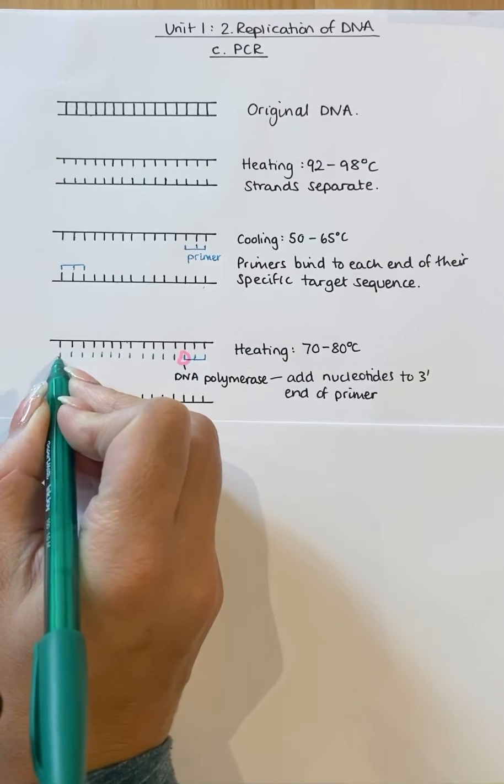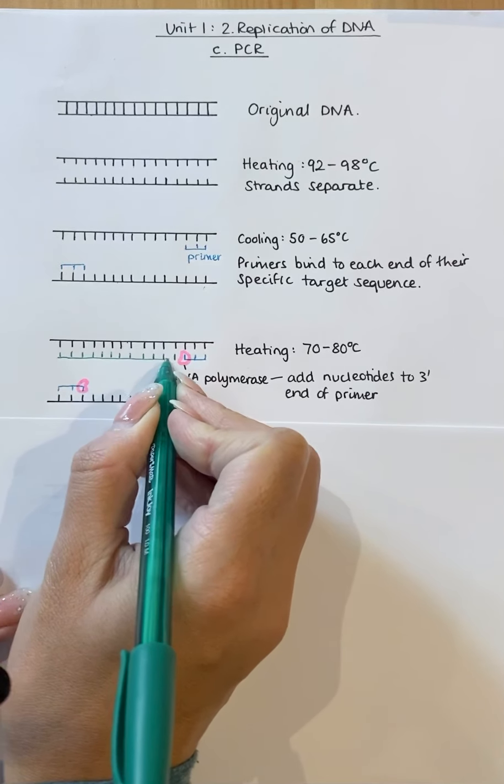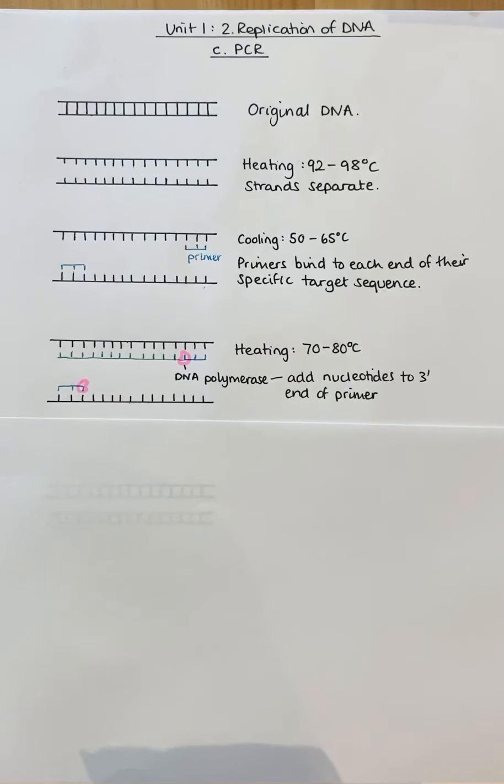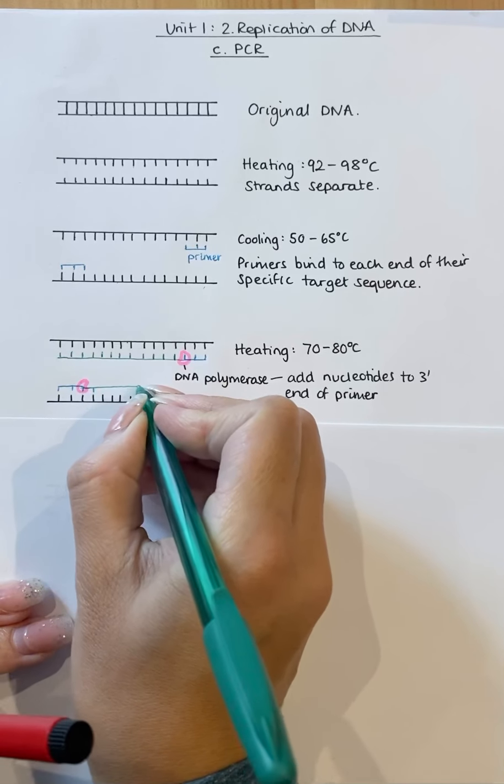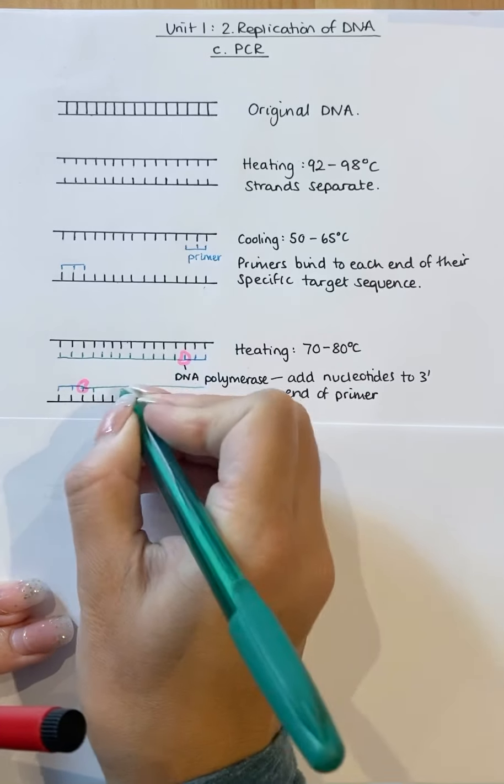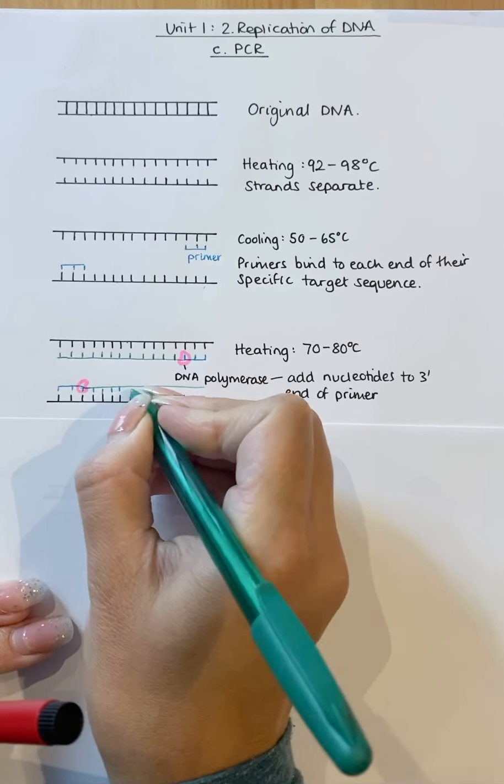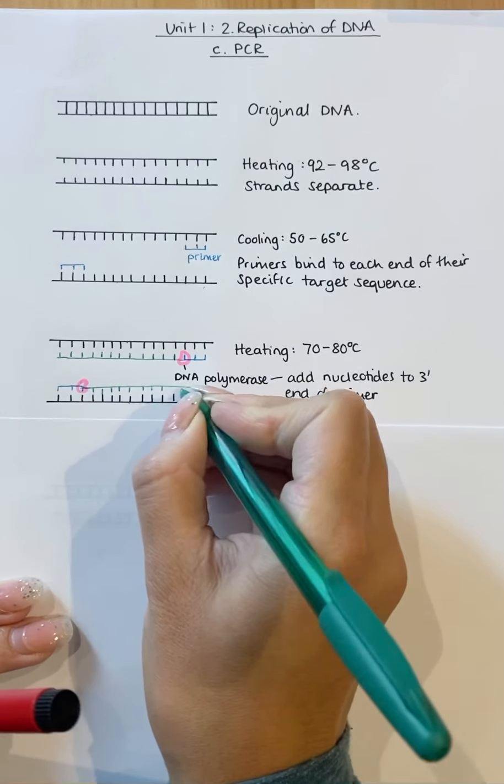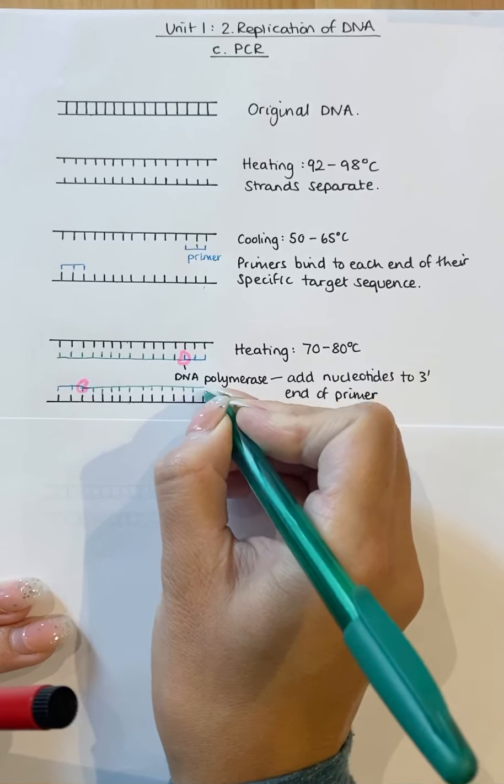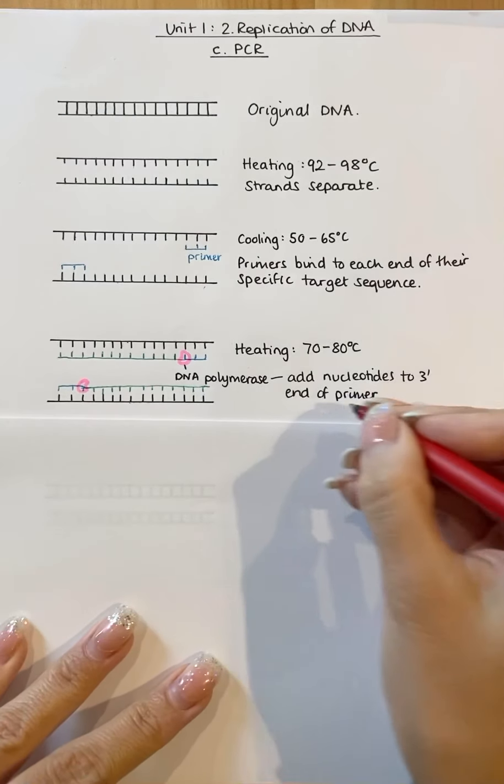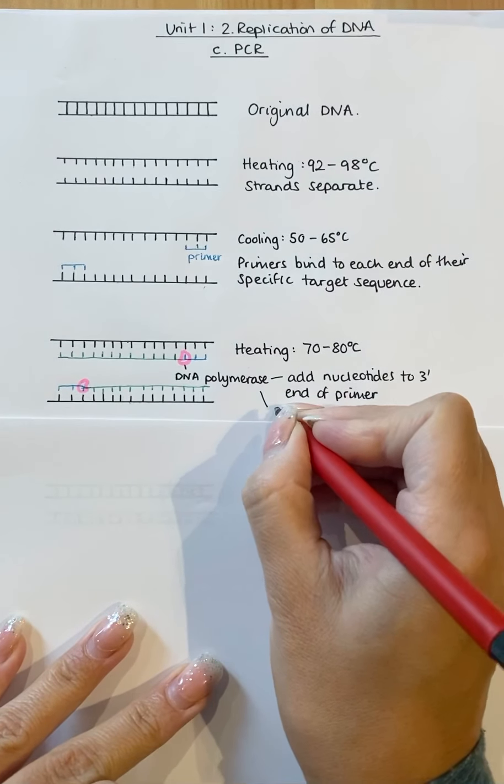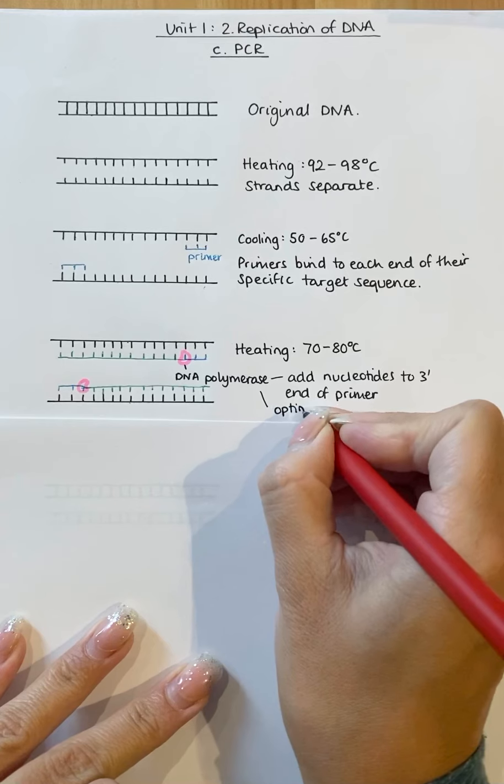And it would do that then by forming a sugar phosphate backbone all the way along. And it would do the same on this new strand on the other side, which is complementary to it. So DNA polymerase would work its way along, adding nucleotides to the 3' end of that primer.